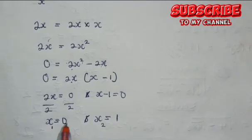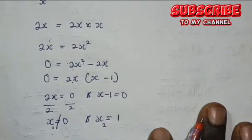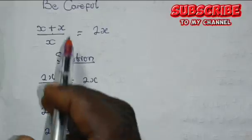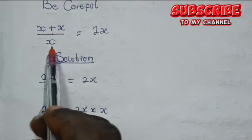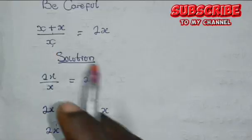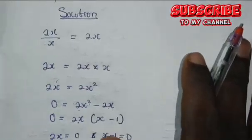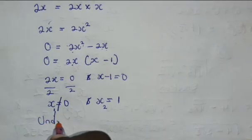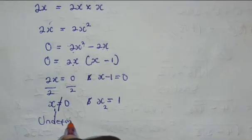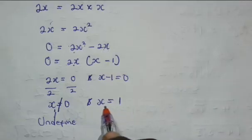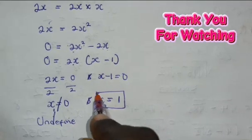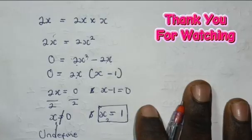Now, note that x is not equal to 0, because in the original equation we have x plus x divided by x — that means we would be dividing by 0. And when you divide by 0, it is undefined. So, the only acceptable value for x is 1, which satisfies the equation.